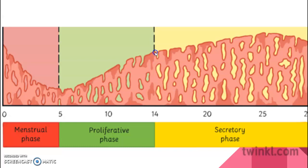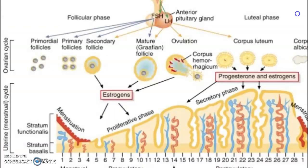After ovulation, the uterus operates under the belief that implantation will occur. Further changes take place in the endometrium — it becomes more thickened, with more vascularization and increased storage of glycogen food reserves, making it a soft, thick, and nutritious bed for the arrival of the fetus. The endometrial layer also becomes glandular in nature with the capacity to secrete. This phase is called the post-ovulatory phase, secretory phase, or preparatory phase.